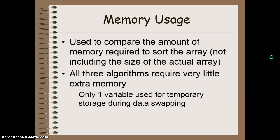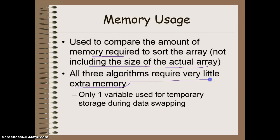The next way of comparing our algorithms is the amount of memory required. We look at how much memory we have to use, not including the actual array itself, since that's constant regardless of algorithm. We only need one extra variable for temporary swapping of data. There are other sorting algorithms that require full copies of the entire array, so you sacrifice more memory but those algorithms tend to be much quicker on the computational side. So you have to weigh whether you want to sacrifice memory or processing speed.